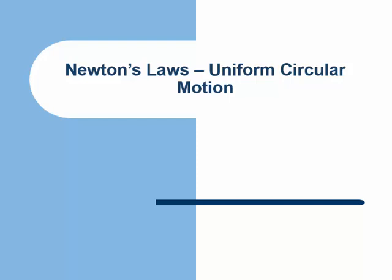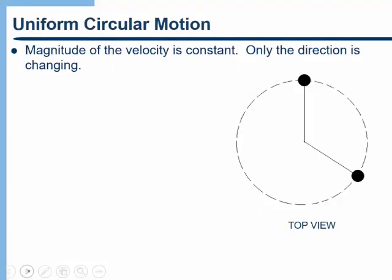In this video, we're going to continue our discussion of Newton's laws of motion, and in particular, we're going to look at the case of uniform circular motion. Uniform circular motion is a motion where the speed of the object is not changing and it's going in a circle. The magnitude of the velocity, which is just the speed, is constant. Only the direction of the object is changing.